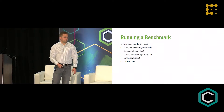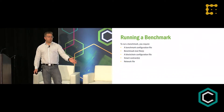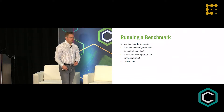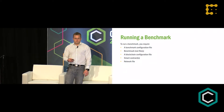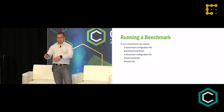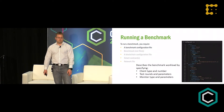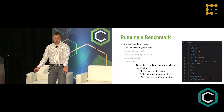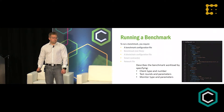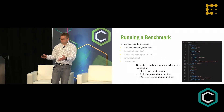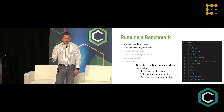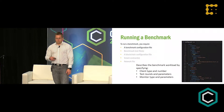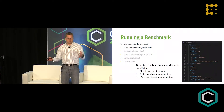To run a benchmark, you need benchmark configuration files, benchmark test files, a blockchain configuration file, smart contracts, and a network file. It sounds a lot, but each one is actually pretty self-explanatory and they tie together. The benchmark configuration file describes your benchmark — it's your workload, defining the client type and number, how many rounds, what the parameters are, what type of monitor you want, and what type of driving rates you want.